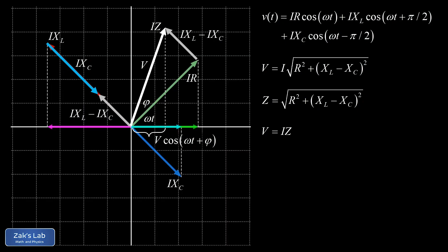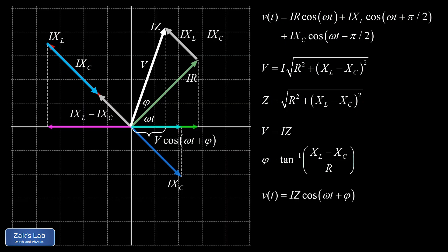Remember that Z is frequency dependent because the inductive and capacitive reactances are both frequency dependent. The phase angle φ relative to the current phasor is the inverse tangent of (X_L − X_C)/R, just reading the legs of the right triangle. So our source voltage can be written as v(t) = IZ·cos(ωt + φ), where φ is the phase angle between the current and voltage functions.